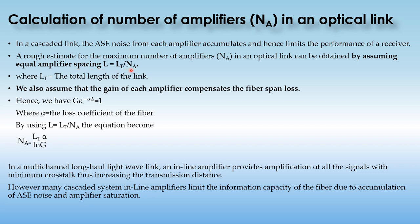With equal amplifier spacing, l = L_t / N_a, where L_t is the total length of the link and N_a is the number of amplifiers. Assuming the gain of each amplifier compensates the fiber span loss, we have: G · e^(−α·l) = 1, where α is the loss coefficient of the fiber. Substituting l = L_t / N_a gives the formula: N_a = L_t · α / ln(G).